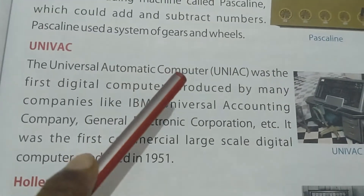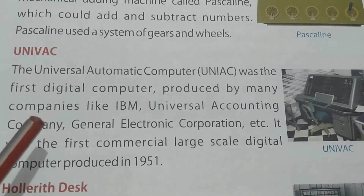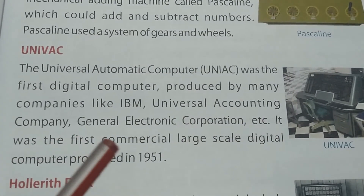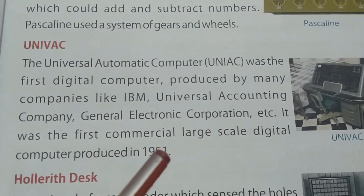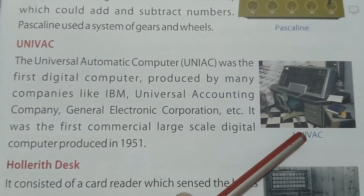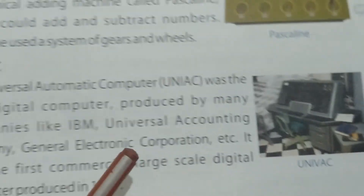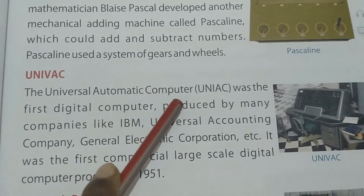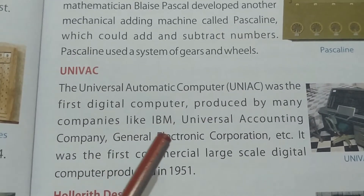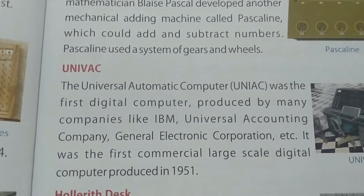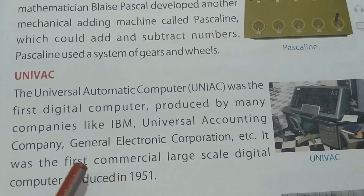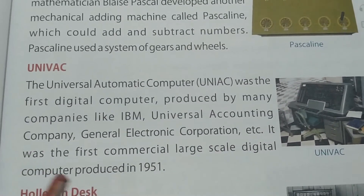Next comes UNIVAC. UNIVAC — the Universal Automatic Computer — was the first digital computer produced by many companies like IBM, Universal Accounting Company, and General Electronic Corporation. It was the first commercial large-scale digital computer, produced in 1951. These companies produced it in large quantities to sell in the market.